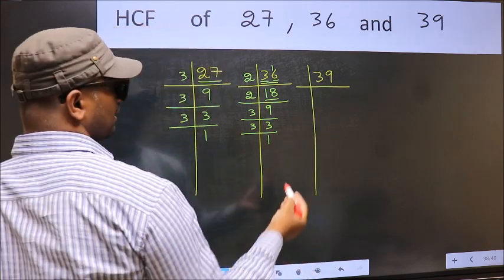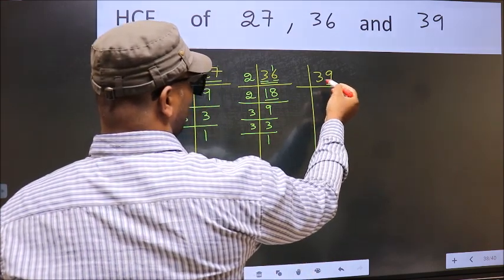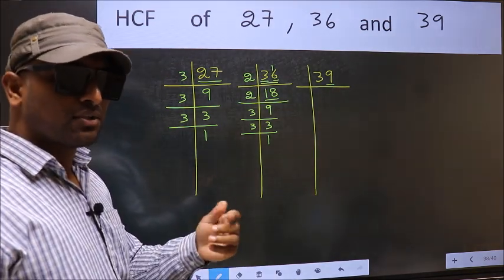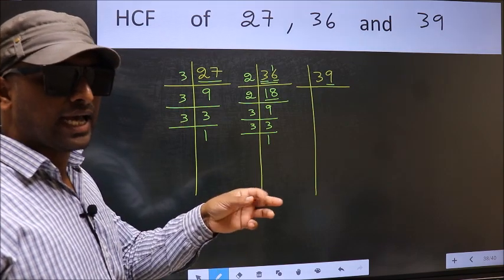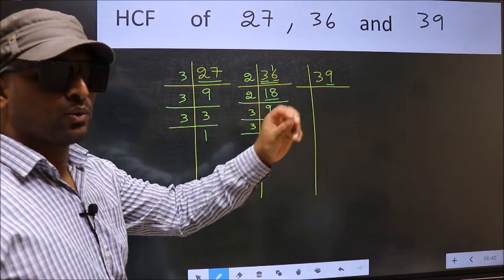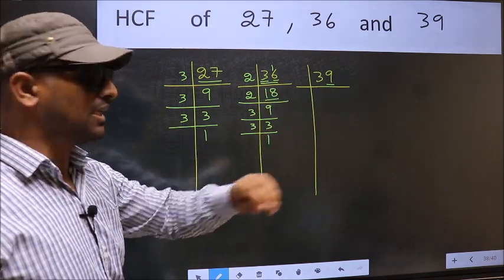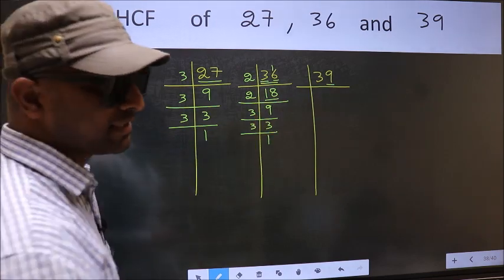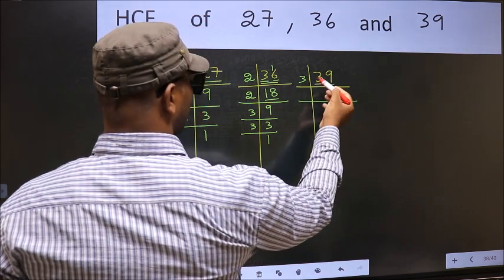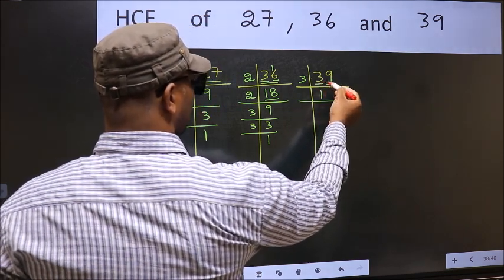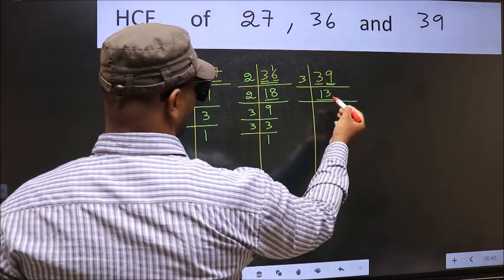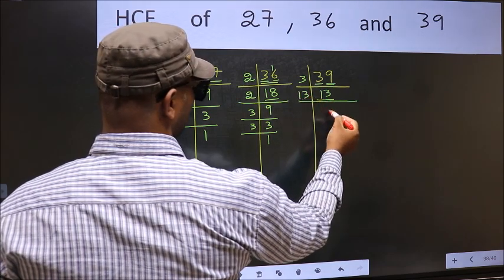Now the other number, 39. The last digit is 9, which is not even, so not divisible by 2. The next prime number is 3. To check divisibility by 3, add the digits: 3 plus 9 gives 12, and 12 is divisible by 3. So this number is also divisible by 3. Dividing 39 by 3 gives 13. Now 13 is a prime number, so 13 = 13 × 1.